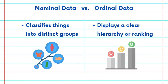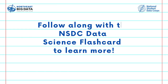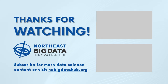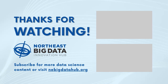Understanding the difference between nominal and ordinal data is essential for proper data analysis. Nominal data categorizes without an inherent order, while ordinal data adds the valuable element of ranking or order. That is all for today — thank you all for watching. Please follow along with the rest of the NSDC flashcard video series to learn more, and see you next time.